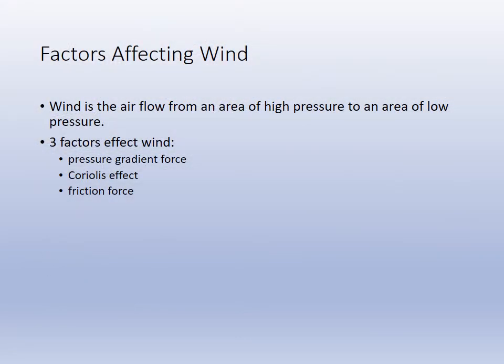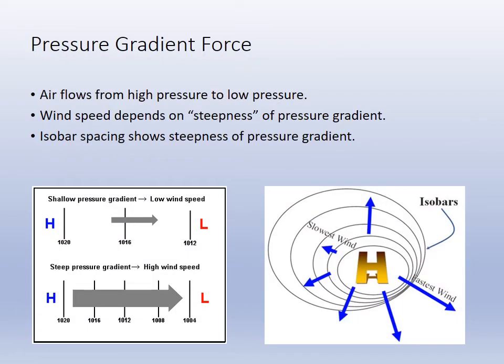The three factors that affect wind are the pressure gradient force, or the difference in pressure — remember, gradient means change — the Coriolis effect, and the friction force. When we refer to pressure gradient we're looking at the difference between the high and low pressure system. Air flows from high to low pressure, and the steeper the gradient, the stronger the wind.